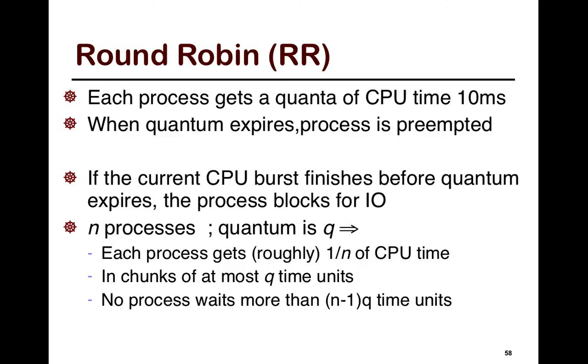In FCFS, the process is not preempted until it finishes. It's not really preempted, it's a form of yielding. But in round-robin, preemption is necessary and essential because each process gets a quantum, and when the quantum expires, you have to move the process out and bring another one in. If the current CPU burst finishes before the quantum expires, then the process just blocks for I/O possibly.